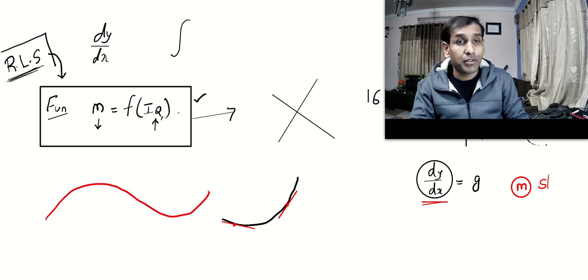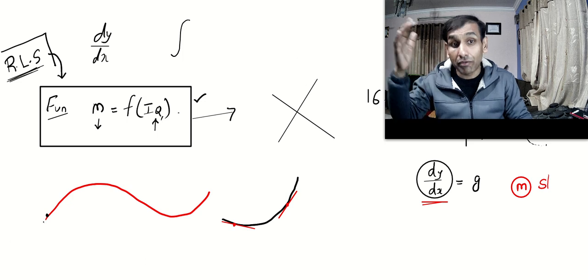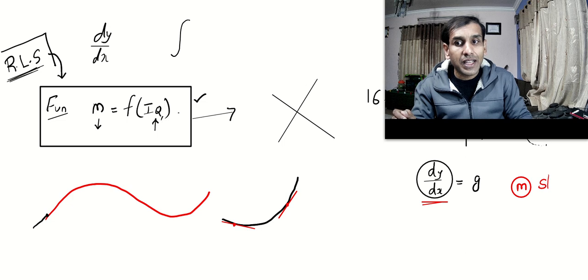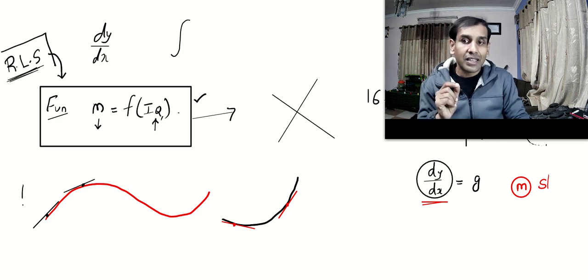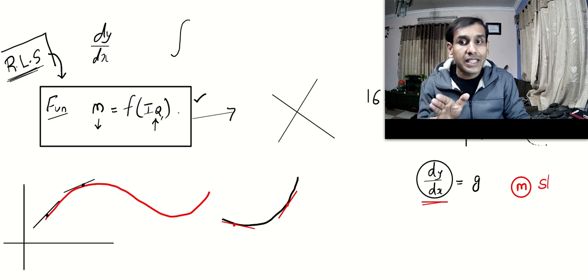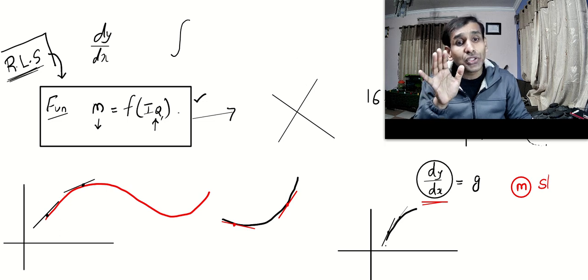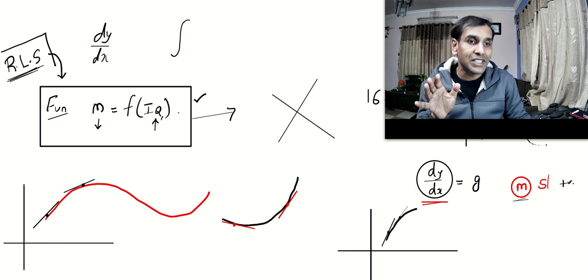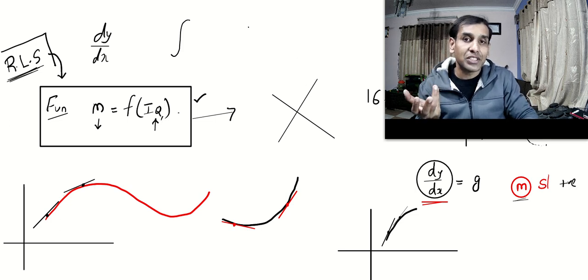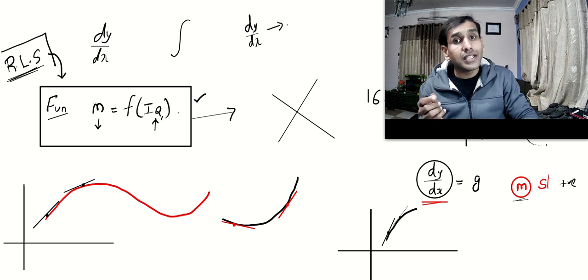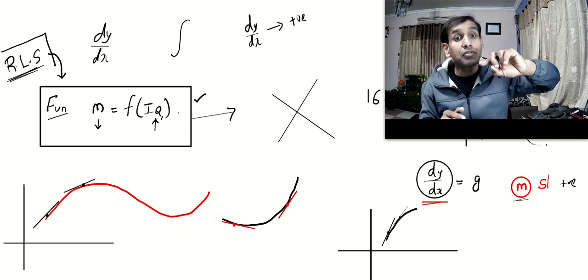So dy/dx is nothing but the gradient of the tangent. If the function is differentiable, you will be able to draw a tangent at each and every point. You will notice that the gradient of the tangent at any increasing part will be positive. Take it as a challenge — draw an increasing graph, make tangents at any point in the increasing part, and you will see that the gradient or slope will be positive. So if you calculate dy/dx and it turns out to be positive, we know that the graph is increasing.